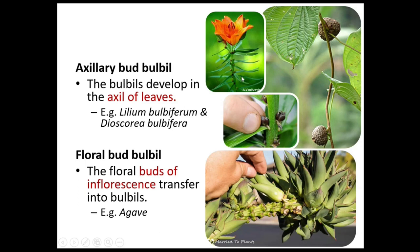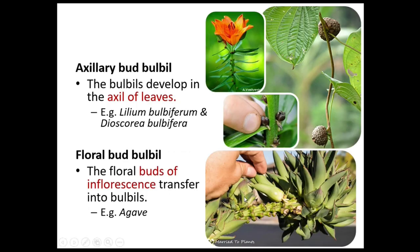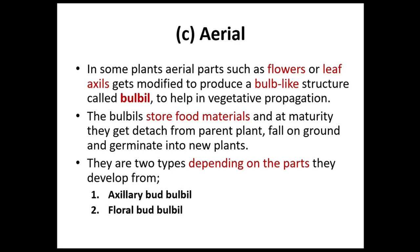Dioscorea also produces edible tubers. The second aerial type is the floral bud bulbil, where some inflorescences, rather than producing flowers, are themselves converted into bulbils. These bulbil-like structures store food material and develop into new plants when detached from the parent plant. An example is Agave. Collect the bulbils and sow them to grow the desired plant.